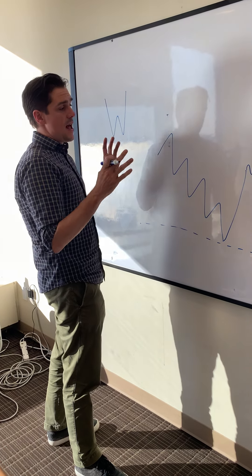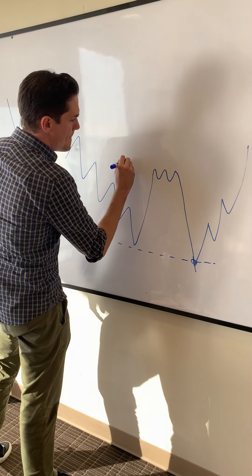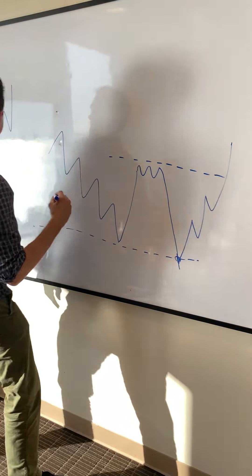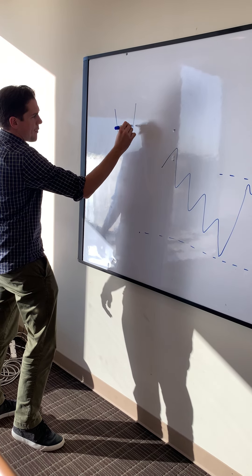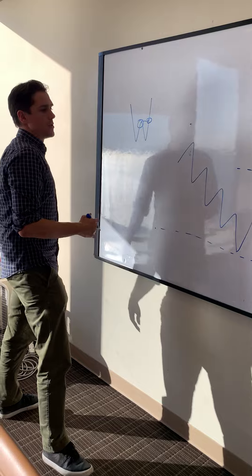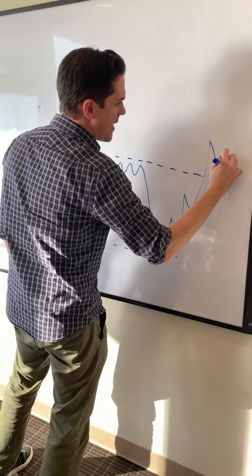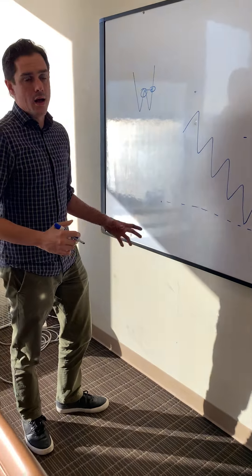You have confirmation of a double bottom when the midpoint breaks. So go back to our letter W here, the midpoint right here. When that breaks, you have confirmation that your double bottom is intact and you have gone from a pattern of lower highs and lower lows to a pattern of higher highs and higher lows.